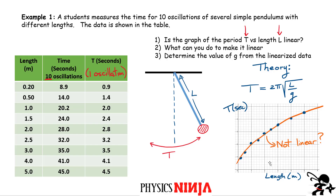Let's do the graph. I plot period on the y-axis versus the length of the pendulum using this data from the table. There should be a point at length 2 and period 2.8, and so on. I drew an orange line through most of the data points to represent the trend, and you can see it does not look like a straight line. That's because the theory doesn't predict a straight line due to this square root factor.